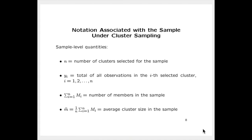At the sample level: lowercase n is the number of clusters selected for the sample. For each selected cluster i going from 1 to little n, y sub i is the total of all the observations in the i-th selected cluster — that is, the total observed response for all members in that cluster. The sum of cap M sub i's from i equals 1 to little n is the number of members in the sample, and dividing that by little n gives lowercase m-bar, the average cluster size in the sample.